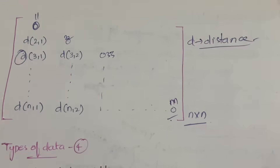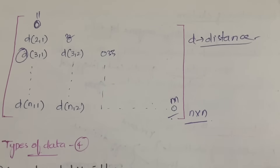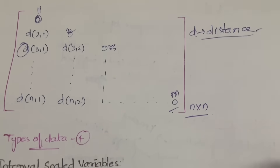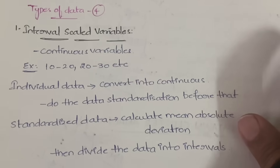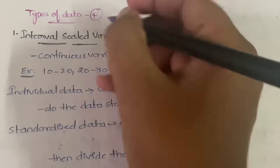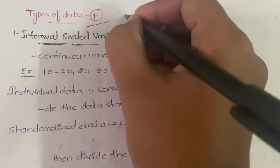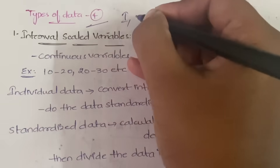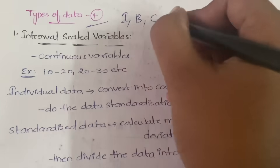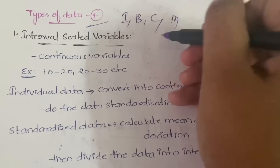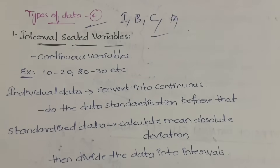Those are the two data structures. Now, the types of data — there are four types: interval scale data, binary variables, categorical variables, and mixed variables.